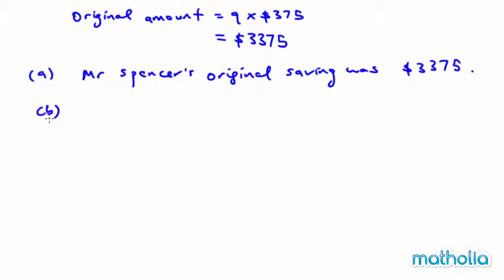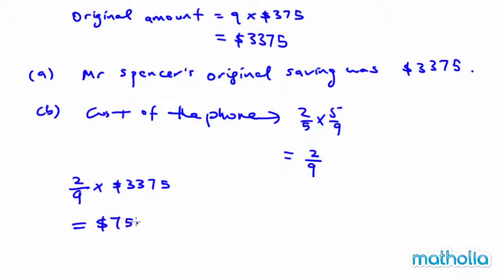Part B. We need to find the cost of the phone. The cost of the phone is 2-fifths multiplied by 5 over 9, and you have 2 over 9. 2 over 9 multiplied by 3,375, and you have 750.